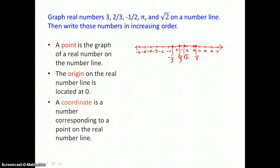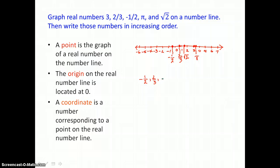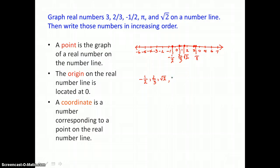When we write these numbers in increasing order, we read our number line from left to right, because smaller numbers are to the left and larger numbers are to the right. So we use the number line to order our real numbers. Negative one-half is the smallest, then two-thirds, then the square root of two, then three, and the largest is pi, because it's furthest to the right.